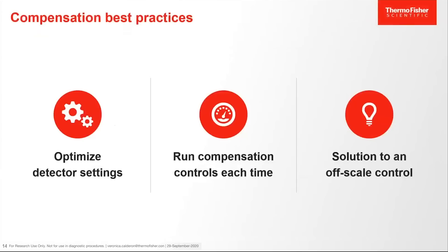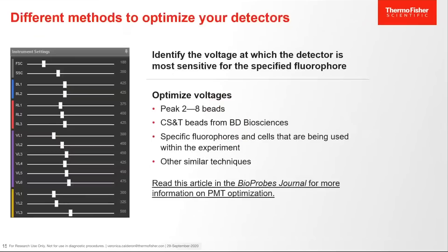Looking at compensation best practices, remember to optimize detector settings, run compensation controls each time, and there is a solution to an off-scale control. Optimizing detectors involves identifying the voltage at which the detector is most sensitive for the specified fluorophore. Voltage optimization can include Peak 2-8 beads, CSNT beads from BD Bioscience, specific fluorophores and cells being used within the experiments, and other similar techniques. More information can be read at the provided link, and these methods can be used across any instrument.